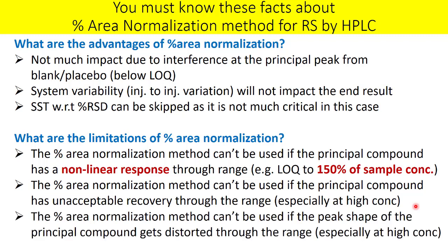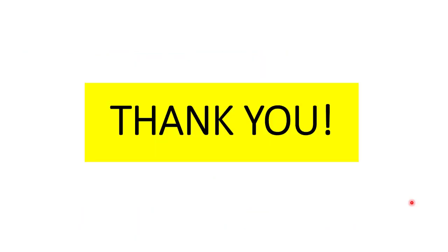Third, percent area normalization cannot be used if the peak shape of the principal compound gets distorted through the range, especially at higher concentration. You should have a symmetric peak or at least an acceptable level of tailing, evaluated at the test concentration. I hope you now have a clear idea of the factors to consider for applying percent area normalization for quantification of related substances by HPLC.